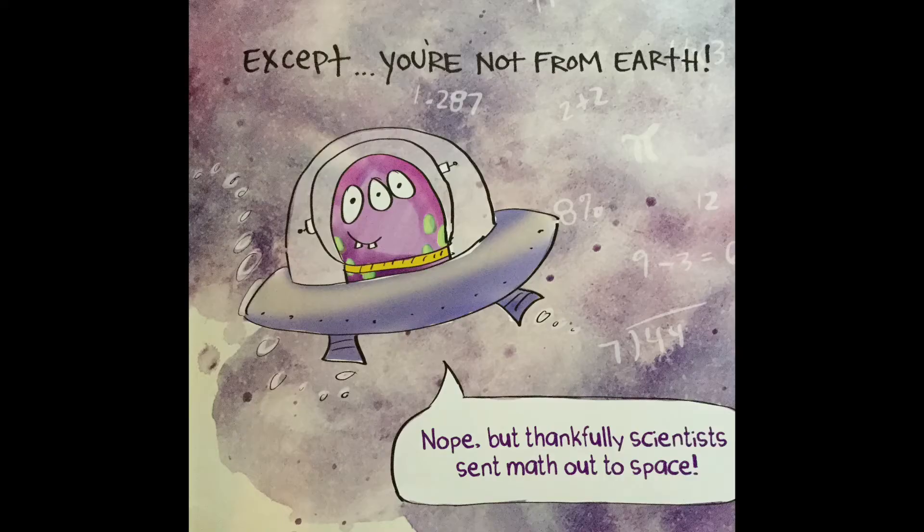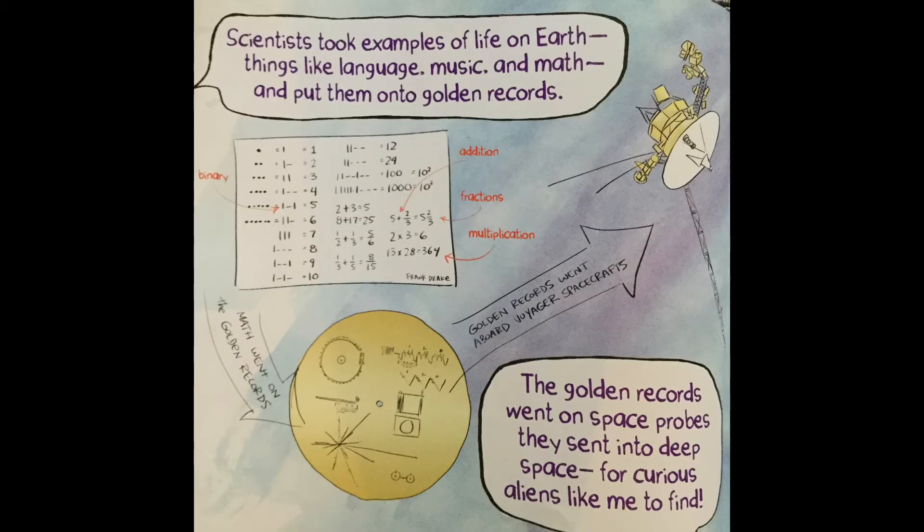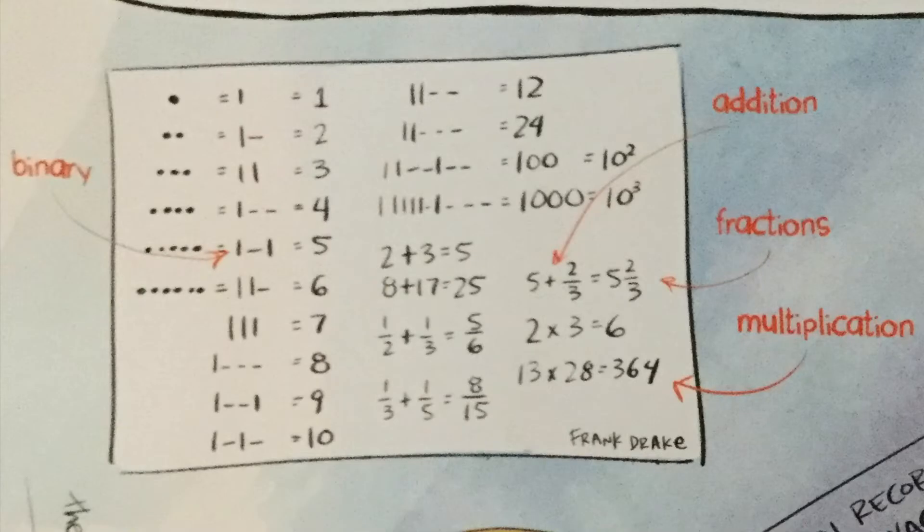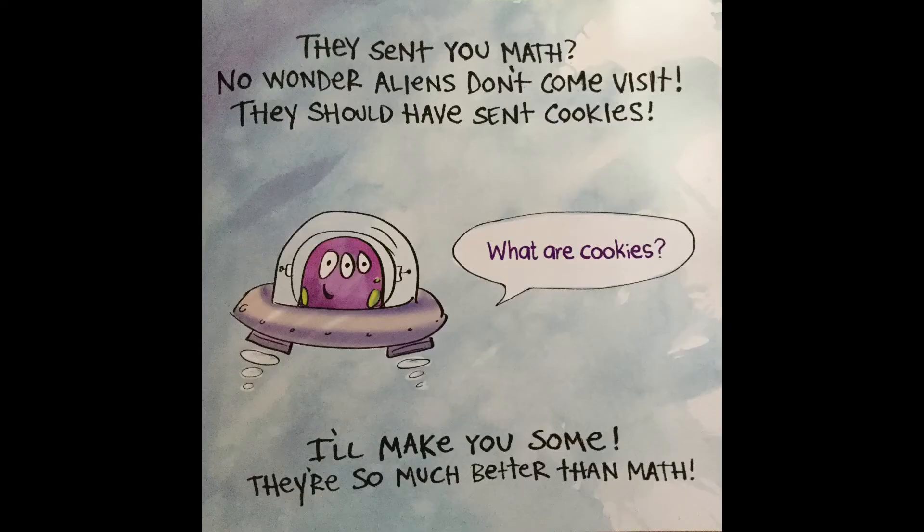But thankfully scientists sent math out to space. Scientists took examples of life on earth, things like language, music, and math, and put them on golden records. Their golden records went on space probes they sent into deep space for curious aliens like me to find. So you can see math went on the golden records. Golden records went aboard Voyager spacecrafts. And if you look at the writing on this little white rectangle here, you can see they use binary code, addition, fractions, multiplication. They sent you math? No wonder aliens don't come visit. They should have sent cookies.